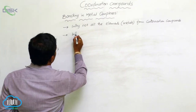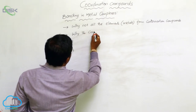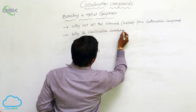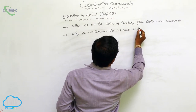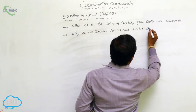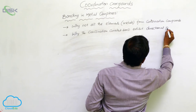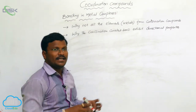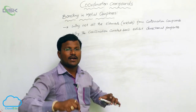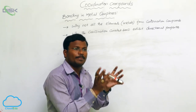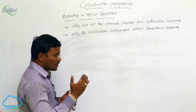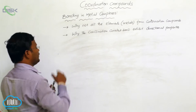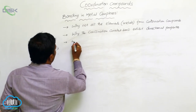The second drawback: why do coordination covalent bonds exhibit directional properties? The ligands are generally connected with the central metal atom or ion via formation of a coordination covalent bond by donating their non-bonding pair of electrons. The resulting bonds exhibit directional properties, and why these bonds have directional properties was never explained by Werner.